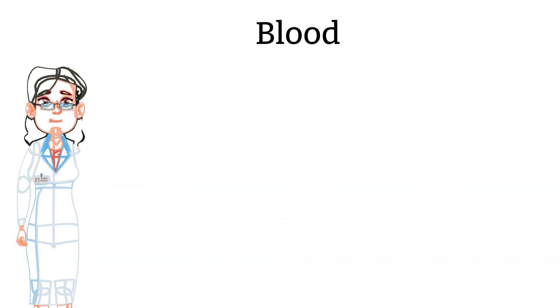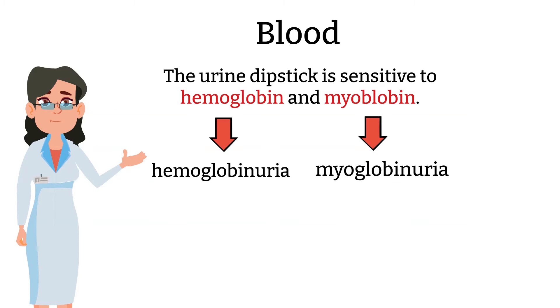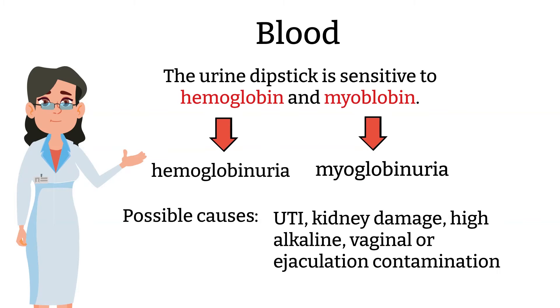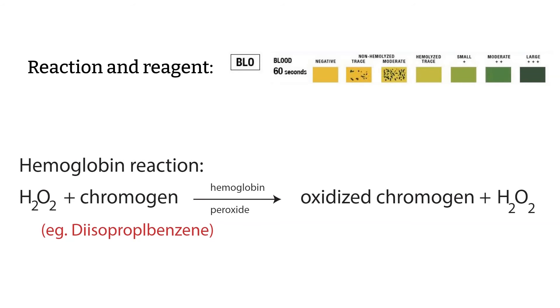Blood. The urine dipstick is sensitive for hemoglobin, but it is also able to detect myoglobin. The presence of hemoglobin in urine is called hemoglobinuria. The presence of myoglobin is called myoglobinuria. Conditions that can cause the presence of blood in urine may be UTI, kidney damage, high alkalinity, or vaginal contamination. Blood reactions are read at 60 seconds. Intact red blood cells give green spots on a yellow or orange background, whereas free hemoglobin or myoglobin will produce a uniform yellow to green to dark blue color. The results are reported as trace or moderate of intact red blood cells, or trace to 3+ for hemoglobin. Here are the reactions and reagents for this test.